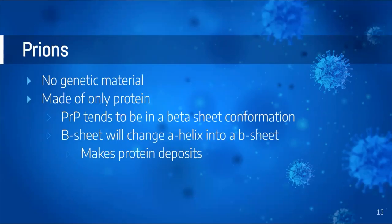Moving on to prions. Prions were only recently discovered because scientists long debated whether proteins could be infectious. That debate brings us to what 'prion' actually stands for: proteinaceous infectious particles. Prions have zero genetic material and are made up entirely of protein.